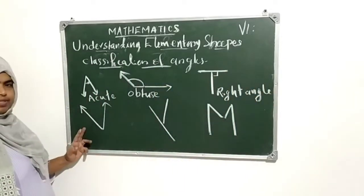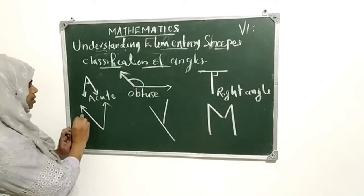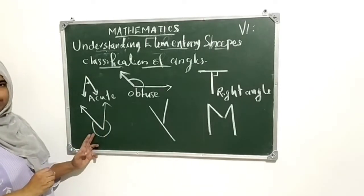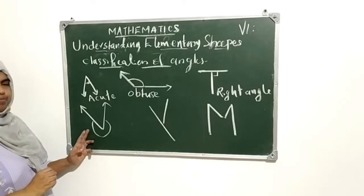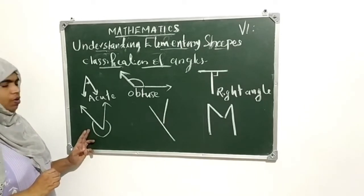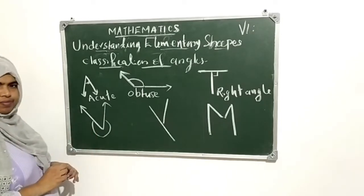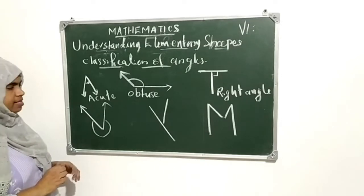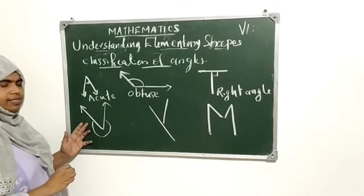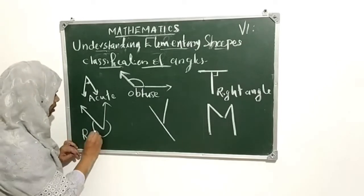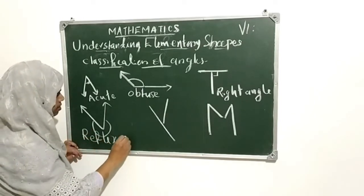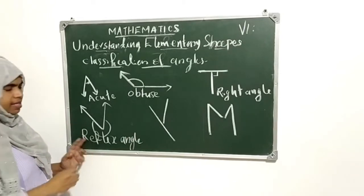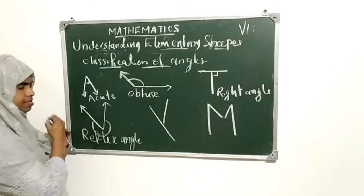Next, see this angle formed here — what is the name of this angle? That is a reflex angle, greater than 180 degrees. Greater than 180 degrees is a reflex angle.